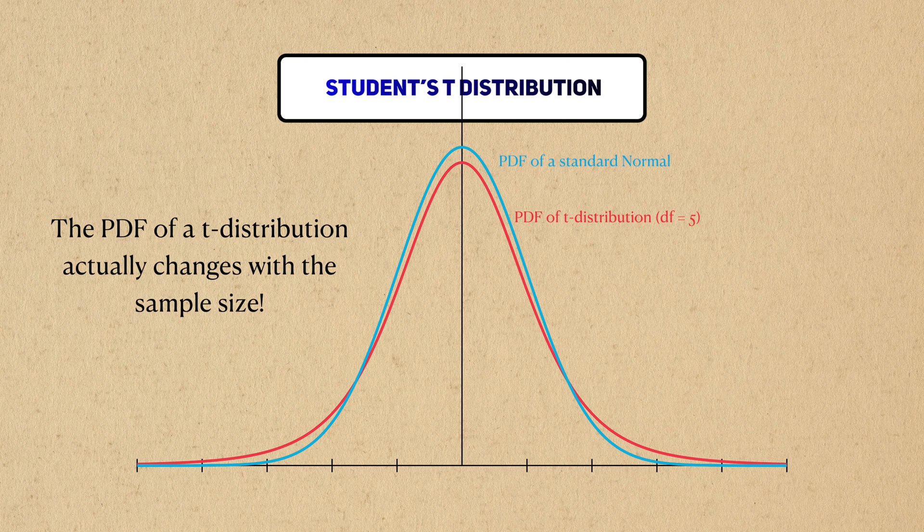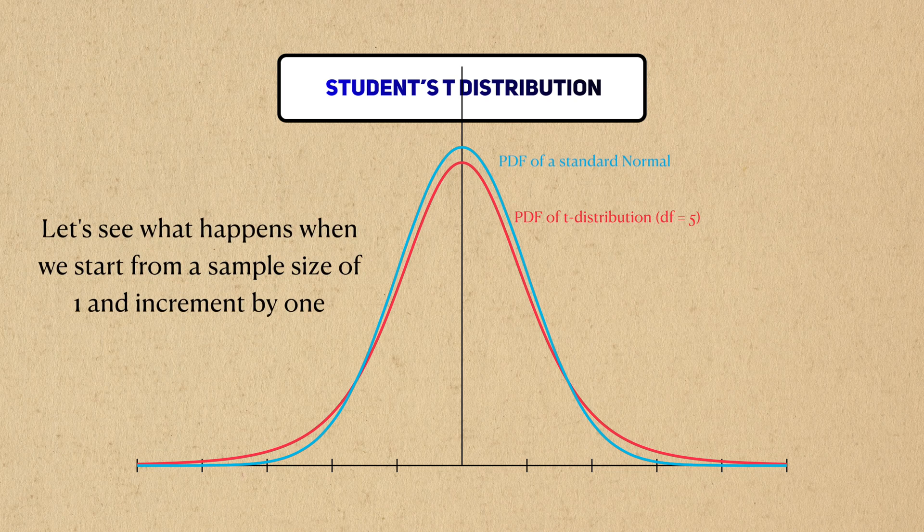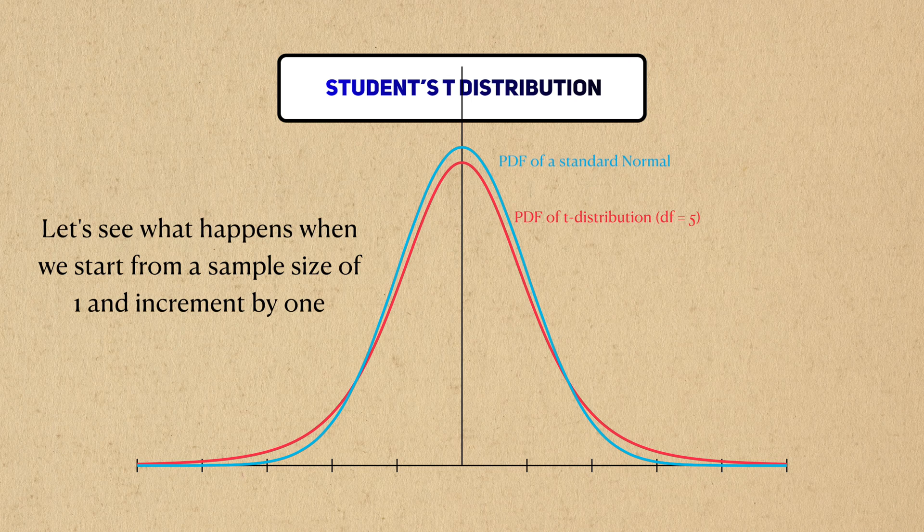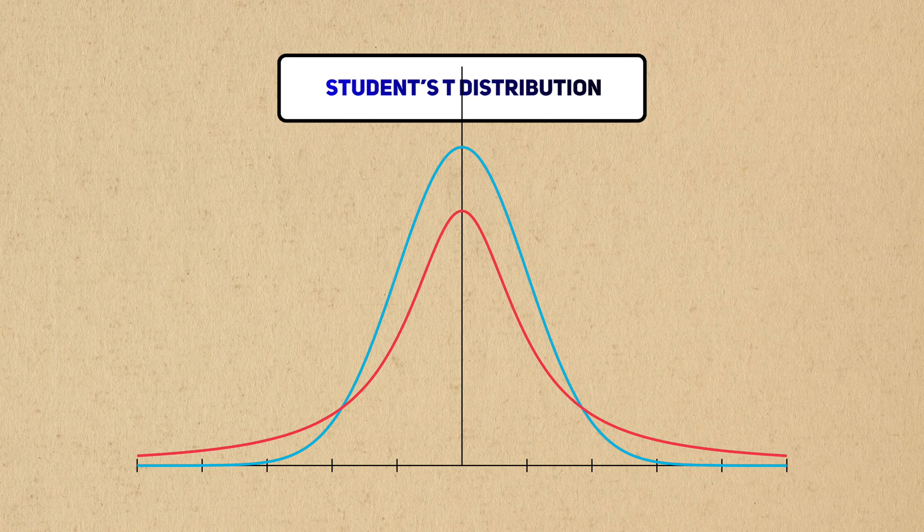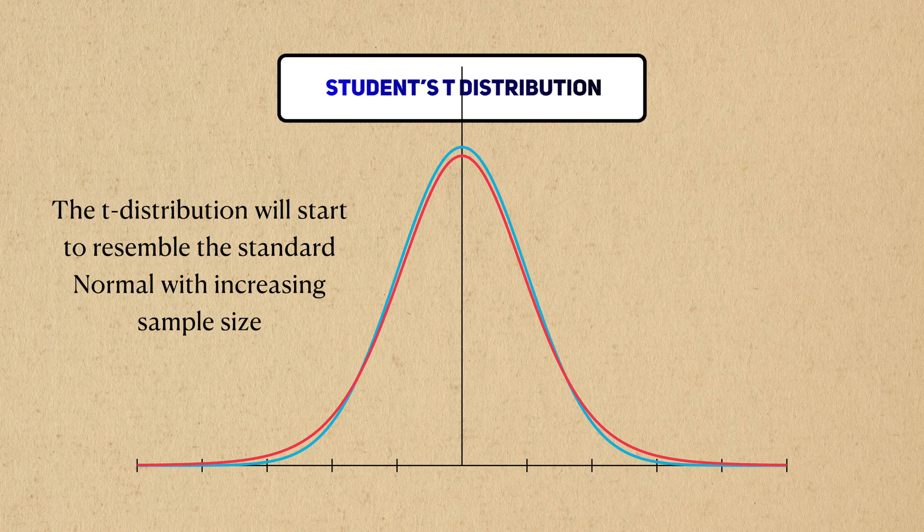The shape of the pdf of a t distribution actually changes with the sample size. Let's examine what happens to the t distribution as our sample size increases. We can see that as the sample size grows, the t distribution will come to resemble a standard normal more.